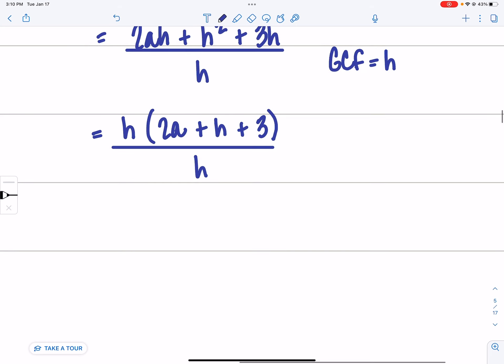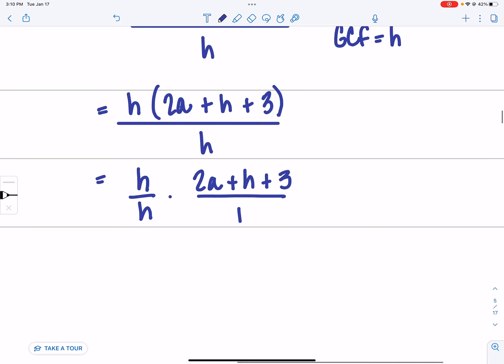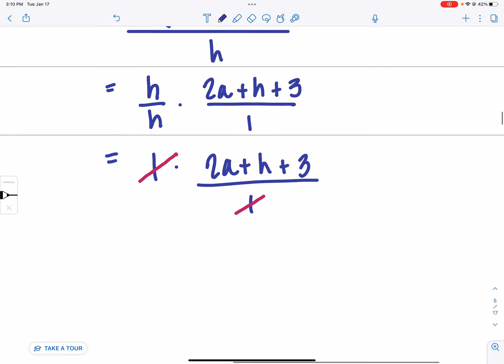I'm going to nerd out on you a little bit. This can be rewritten as h over h times 2a plus h plus 3 over 1. h divided by h is just 1. So really, one times anything doesn't change the value, and then something divided by one doesn't change the value of the thing. So our final answer is 2a plus h plus 3.